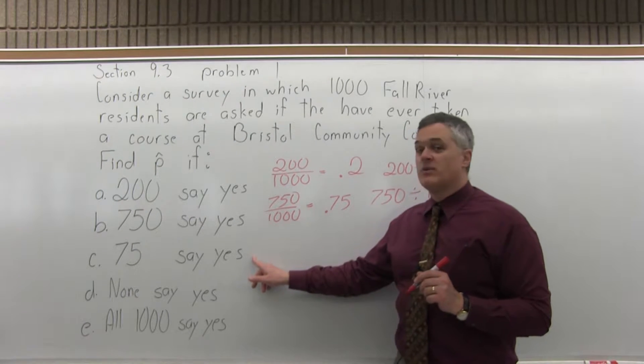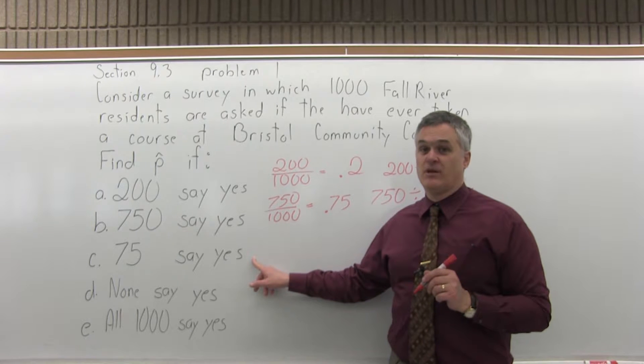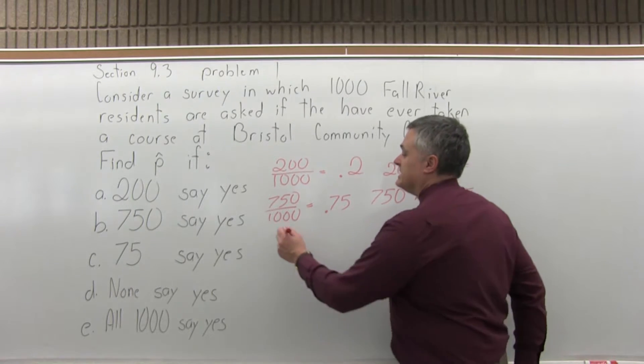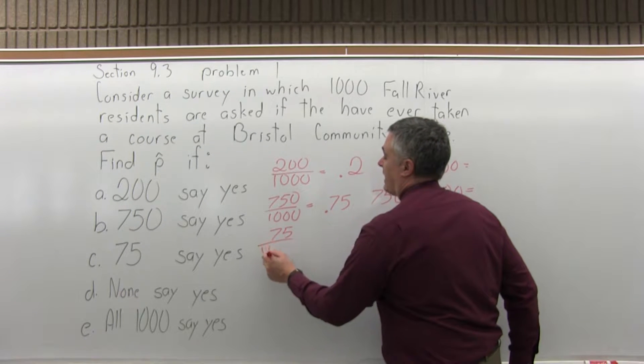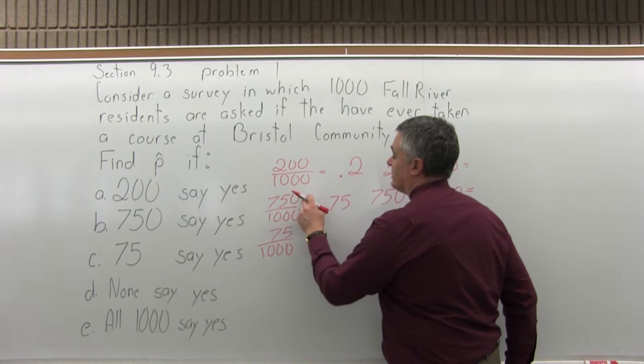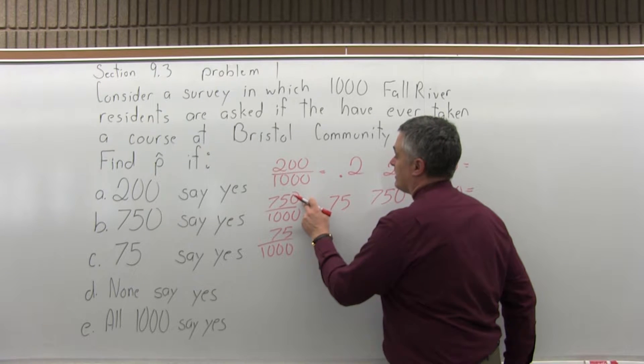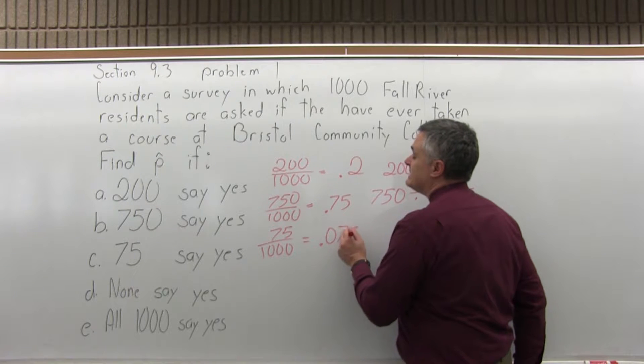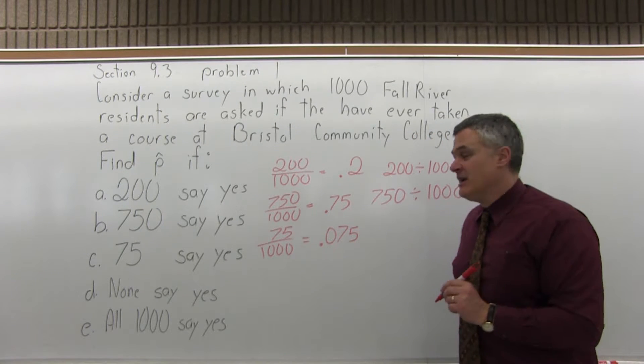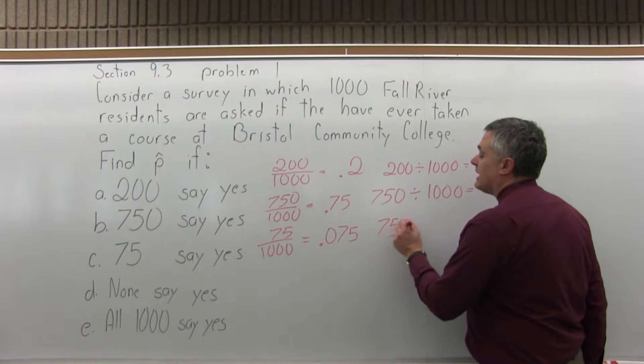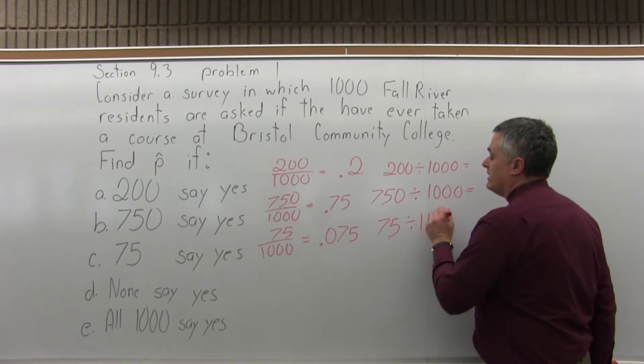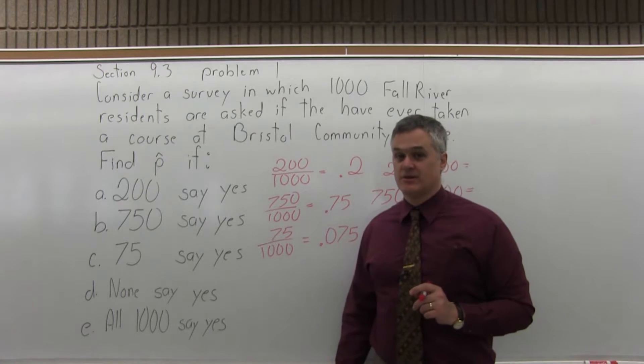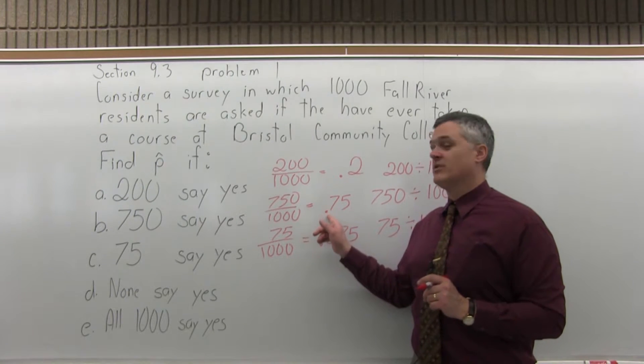Part C, how about if 75 people out of 1,000 surveyed say yes? That would be 75 over 1,000. Be careful with this one. It's different. It looks very similar to the previous one, part B, 750 over 1,000, but the 75 gives you an answer of 0.075. This is where it's not a bad idea to do it on your calculator just to be sure. 75 divided by 1,000 is 0.075, very different than 0.75.